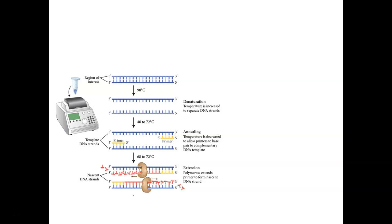How we pull those strands apart is with heat. If we heat DNA up to a sufficient temperature — essentially boiling — those two strands will denature. They'll melt away from each other and separate into single strands. The very first step of any cycle of PCR is heating the DNA sample up to near boiling, typically 95 to 98 degrees centigrade. That causes the double-stranded DNA to become single-stranded.